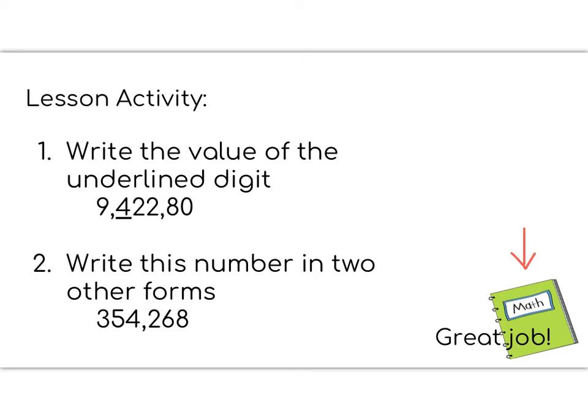So it says we're going to write the value of the underlined digit. So the underlined digit here is the number four. And the value of it is how much it's worth. So if you had me in fourth grade last year, what I would say is if I was going to give you that number four in money, how much money would I be giving you? Is that $40? Is that $4,000? So how much money is that four worth? That's your first problem. And the second problem says write this number in two other forms. So remember we had three forms, word form, standard form, and expanded form. This number looks like it's already in standard form, so you need to write word form and expanded form.